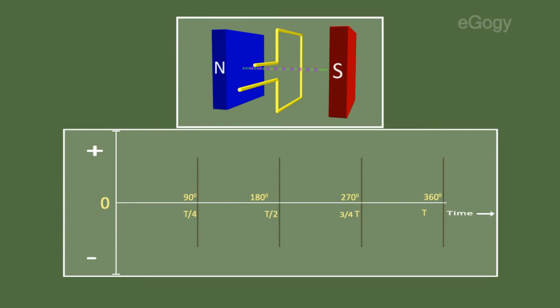After that, the rotation of the armature coil cuts more flux lines and due to this, the angle between the axis of the coil and flux becomes 90 degree. Then maximum EMF is induced in it.